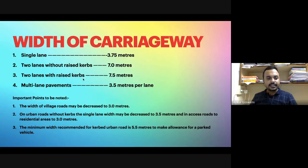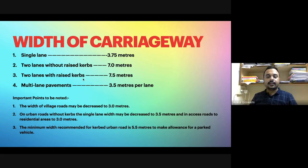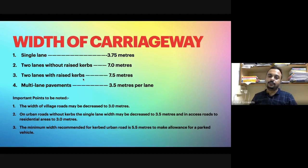For access roads to residential areas such as colonies or townships, even in urban locations, the width can be reduced to three meters. The minimum road width for a curbed urban road is five point five meters to make allowance for a curved vehicle. Generally the width is more than five point five — typically seven point five meters or more on urban roads with curbs.